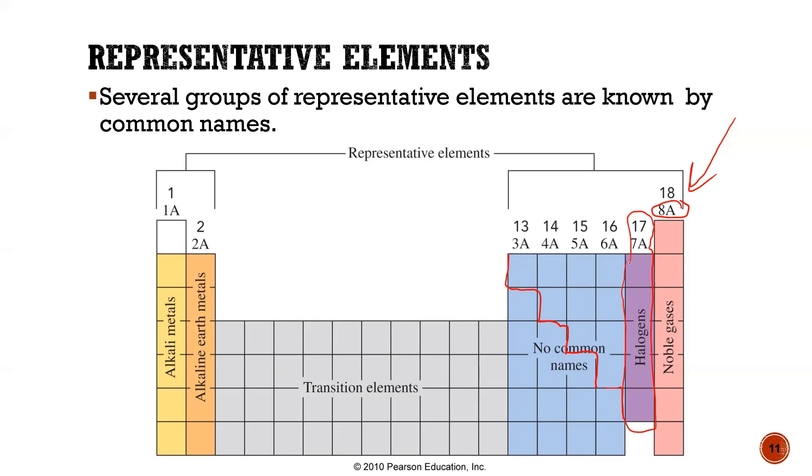So again, periodic table. It's basically focused on three types of elements. To the left are my metals of the staircase. To the right are my nonmetals. And then I have columns, which are groups, and rows, which are periods. So up and down is a group. Rows are periods. So I hope that helps.